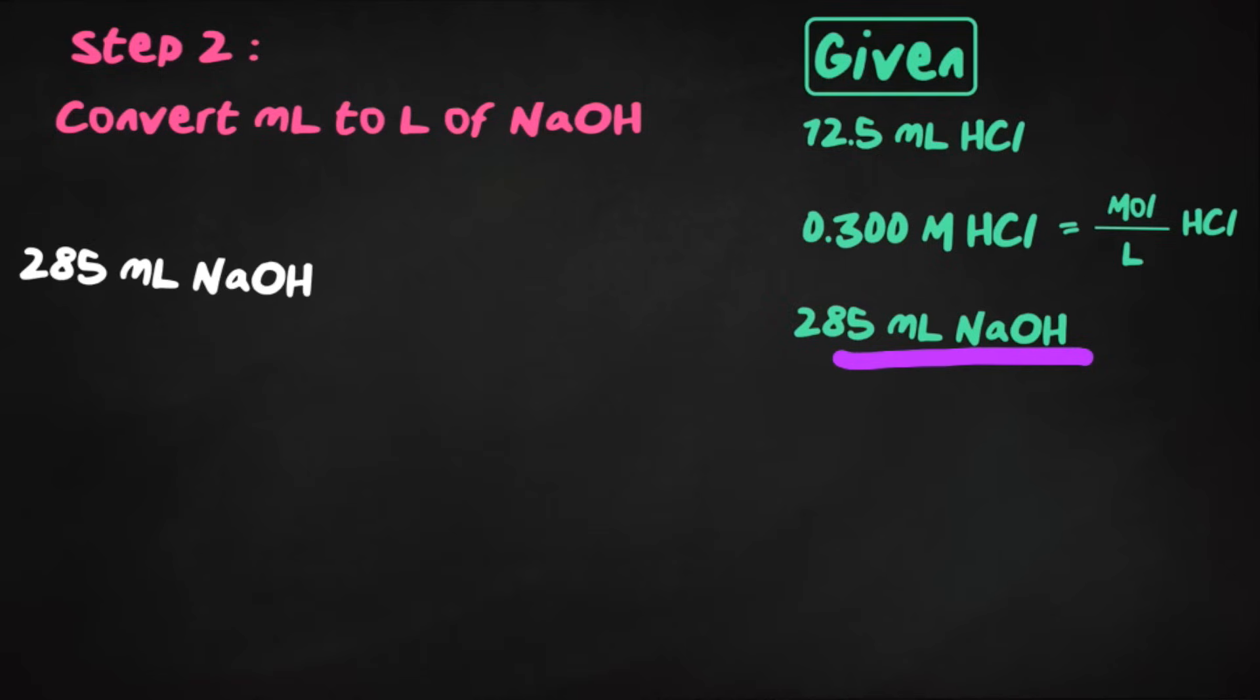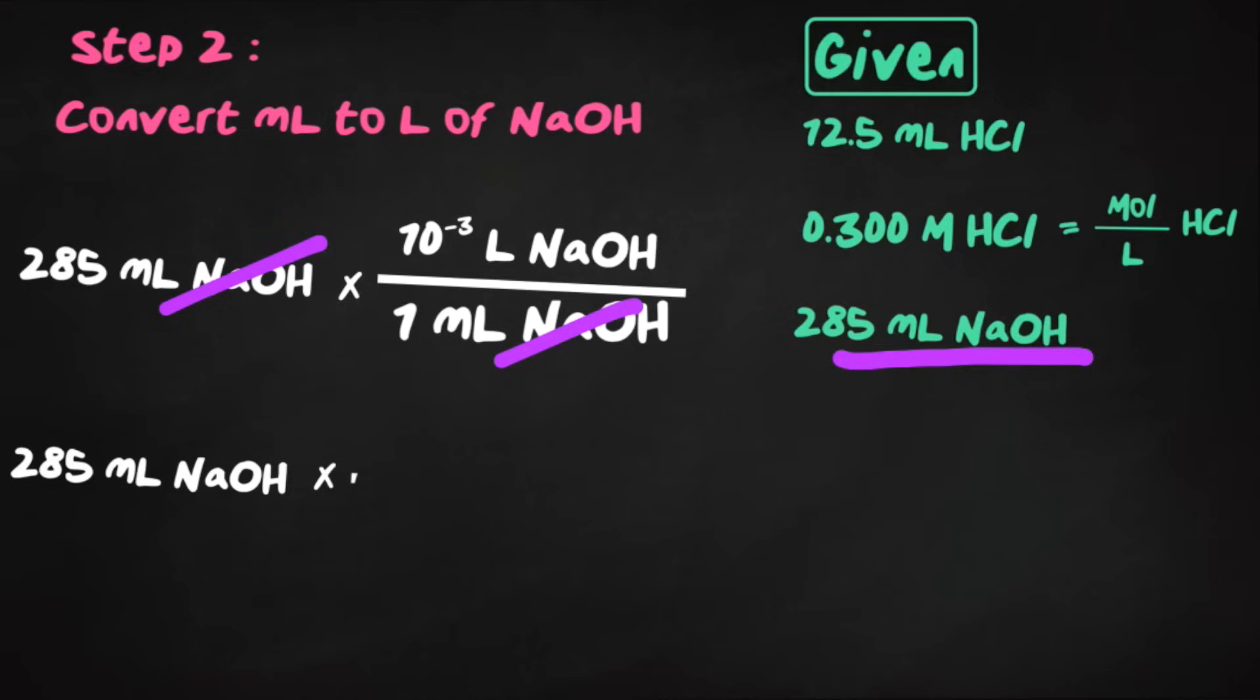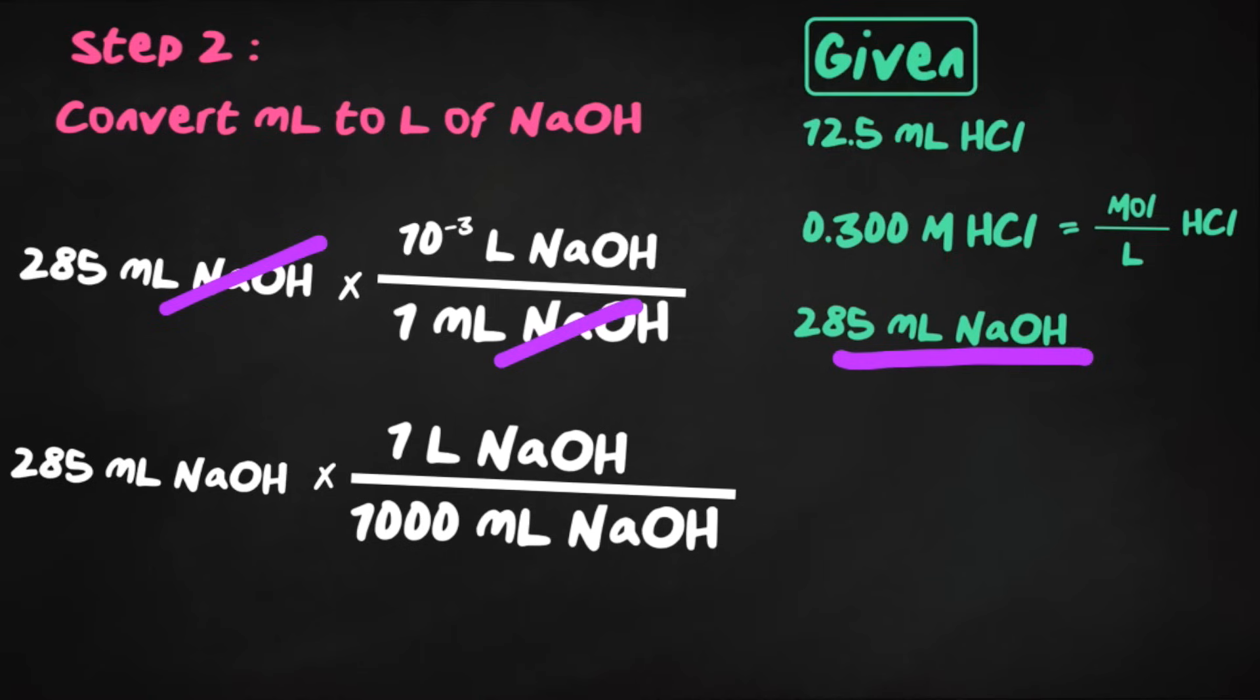So I'm going to take the milliliters of NaOH and align milliliters and milliliters so they can cancel, and then on top I'll place 10 to the negative third liters of NaOH. So our milliliters and milliliters cancel, and now we're at liters of NaOH. There's another way to do this. So if you prefer putting 1,000 milliliters on the bottom and a 1 liter on top, that is completely fine. Both of these will give you the same exact answer. So now we have 0.285 liters of NaOH.